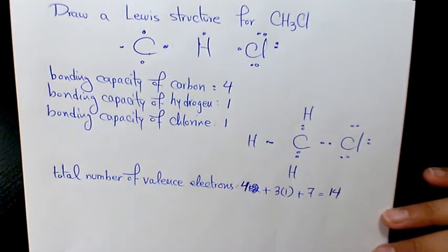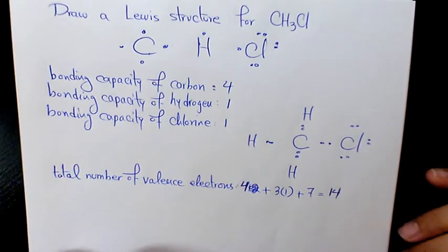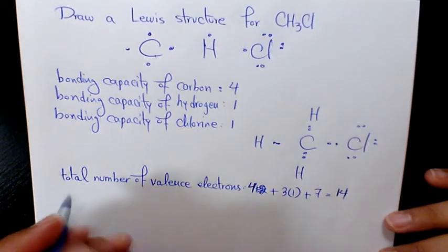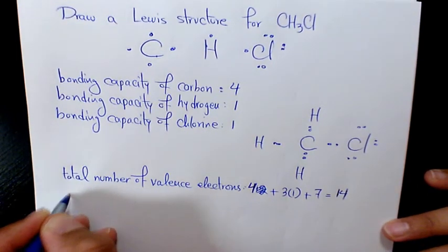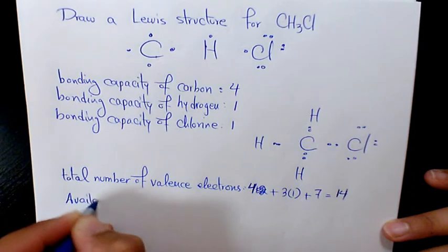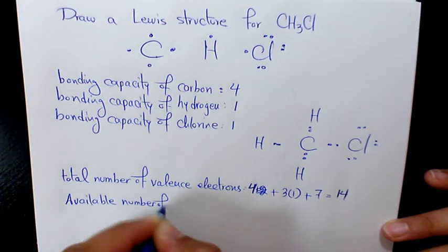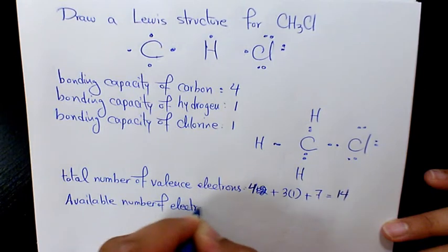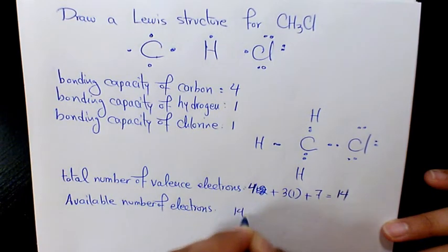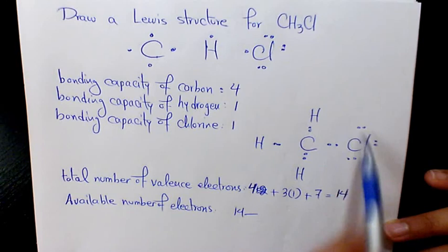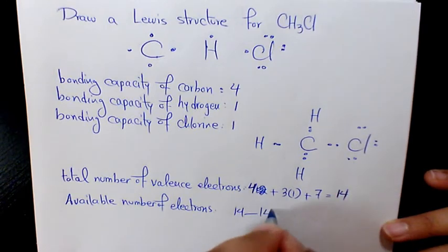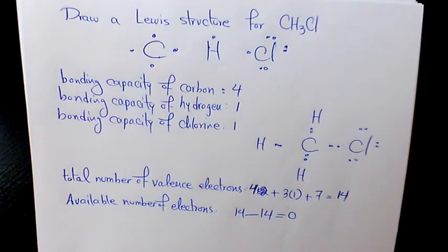Now we determine how many electrons we still have available. We started with 14, and we've used 7 pairs, which is 14 electrons. So 14 minus 14 equals zero — there are no more available valence electrons.